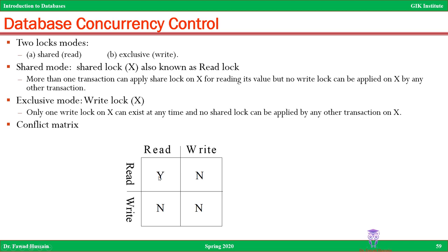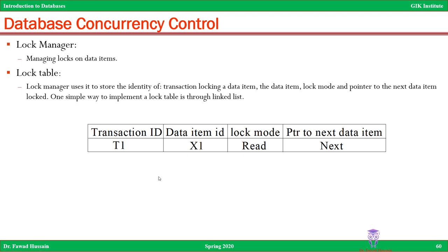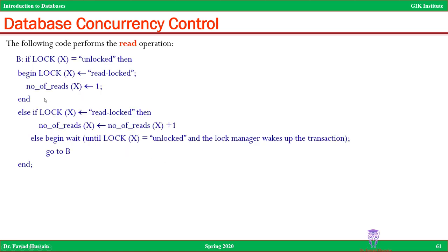The locks are managed by the database using the lock manager, which is responsible for managing locks on data items. It maintains a table storing the identity of the transaction locking the item, the data item, the lock mode, and a pointer to the next data item — one simple implementation is through a linked list. The table records the transaction ID, the data item X being locked, the type of lock (read or write), and a pointer to the next data item.